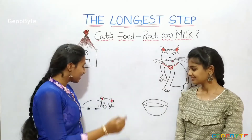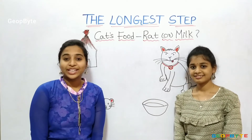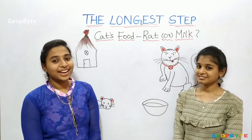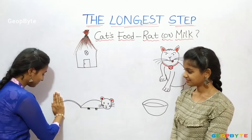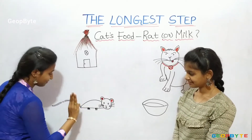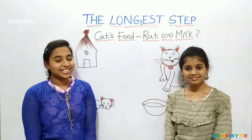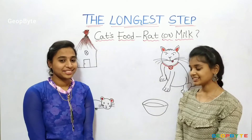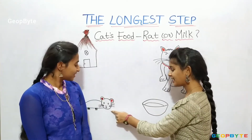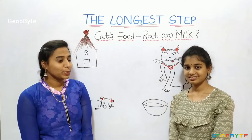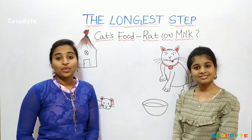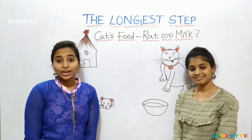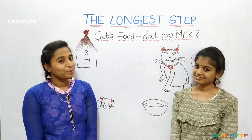Let us measure the length of the rat's tail. The length of rat's tail is 13 fingers. Now, what will the cat reach first — milk or rat? Children, the distance between milk and cat is 4 fingers, but the distance between rat and cat is 22 fingers. So it reaches milk first.